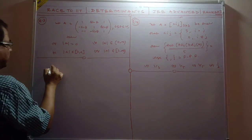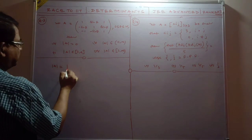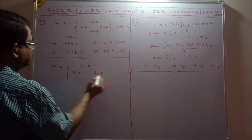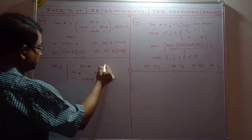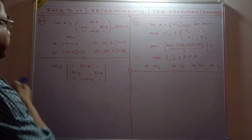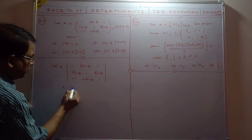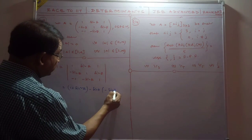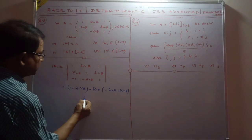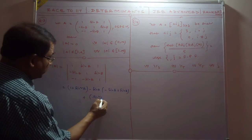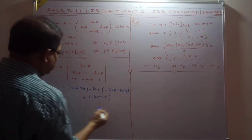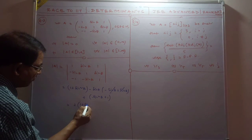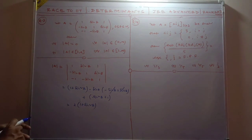The next problem: A is a 3x3 matrix. The determinant of A involves entries 1, sin theta, 1; minus sin theta, 1, sin theta; minus 1, minus sin theta, 1. Expanding this determinant: we get 1 plus sin squared theta, and after simplification, determinant of A equals 1 plus sin squared theta.